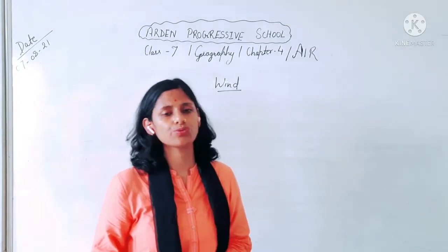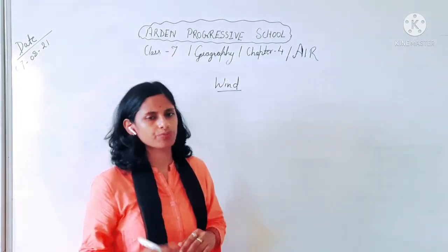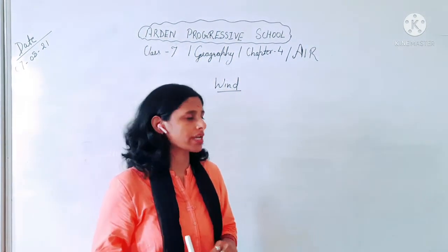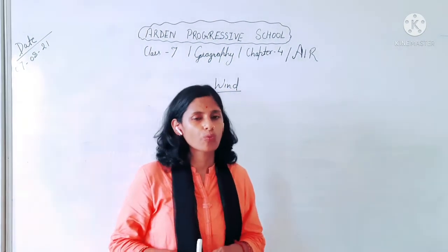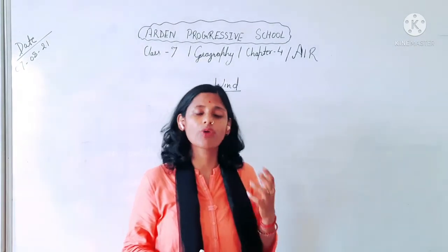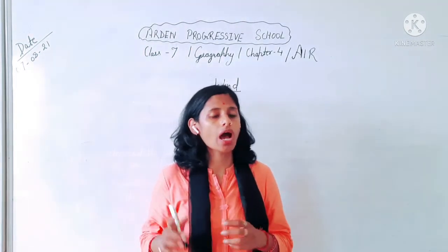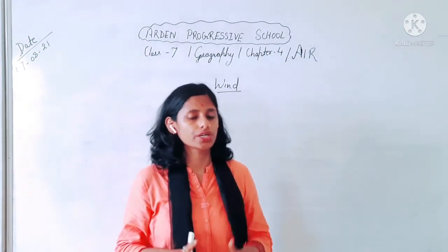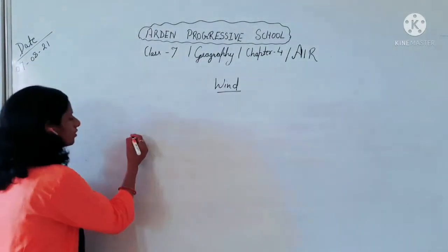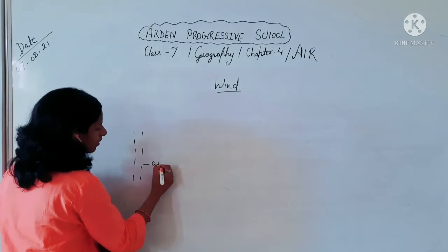Our next topic is wind, which is the third factor that influences the weather or the climate. The air which flows from high pressure to low pressure is known as wind. When the air moves vertically it is known as air current, and when it flows horizontally it is known as wind.